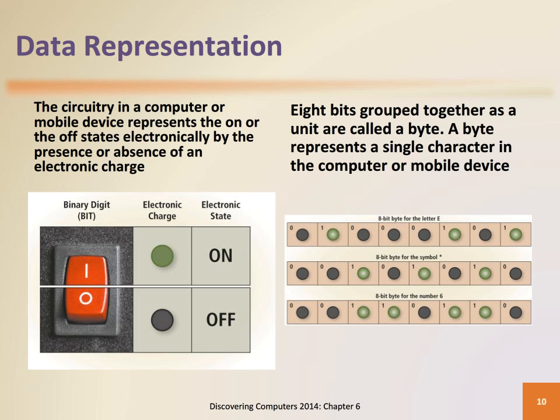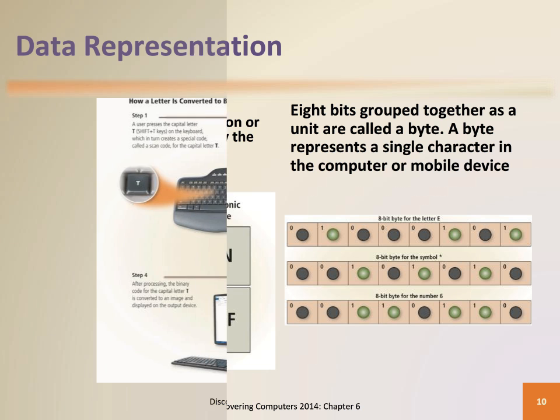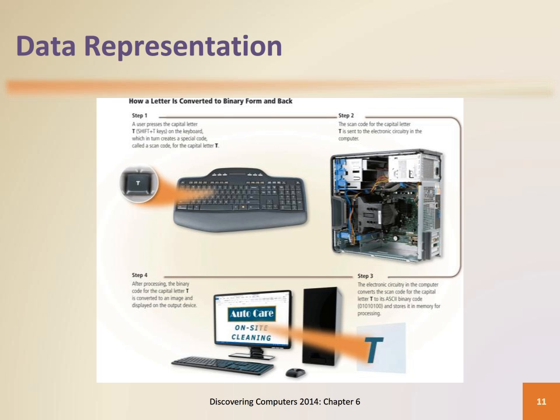When 8 bits are grouped together as a unit, they form a byte. A byte can represent numbers, uppercase and lowercase letters of the alphabet, punctuation marks, or other characters such as the letters of the Greek alphabet. When you press a key on a keyboard, the character is converted to its corresponding byte, which is actually a series of on/off electrical states.